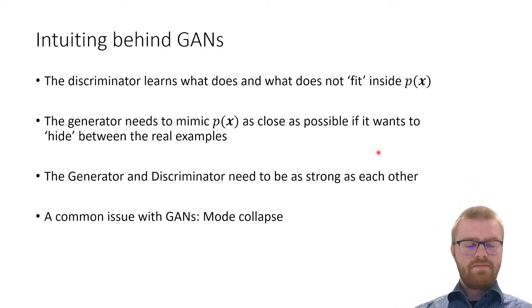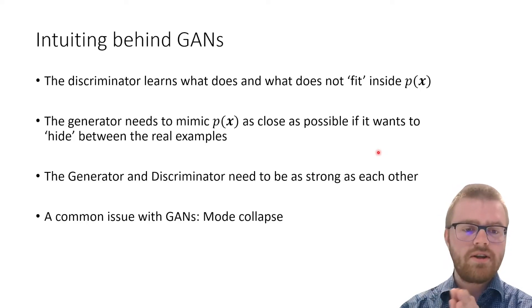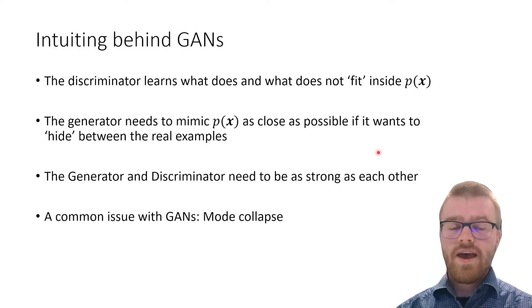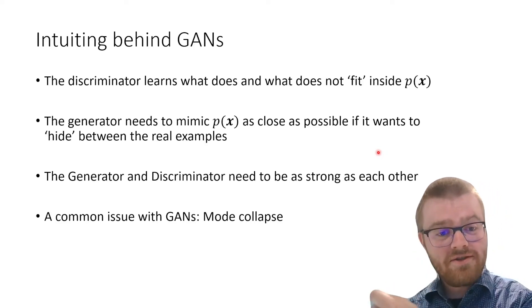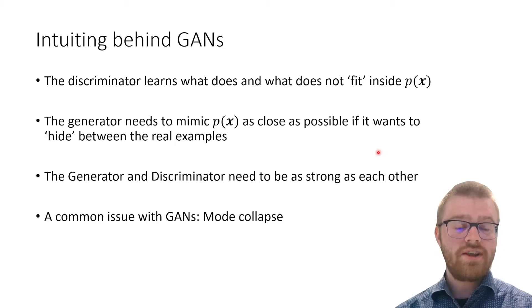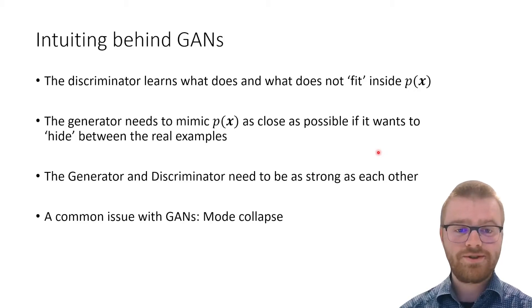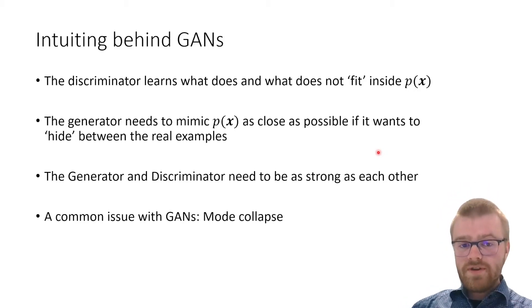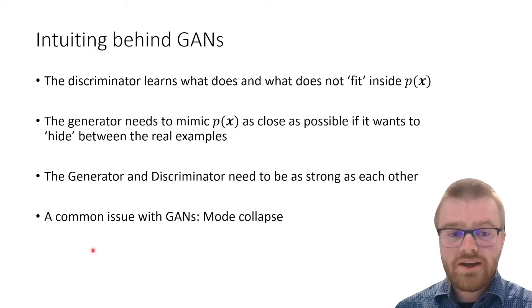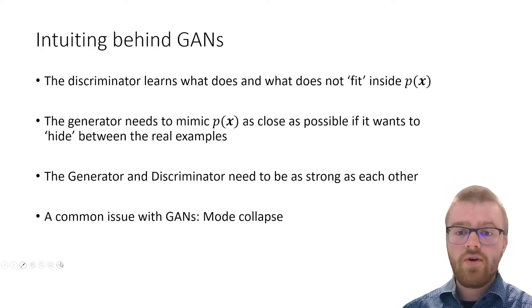The intuition behind this is that the discriminator learns what does and what does not fit inside of the probability distribution P(x). And the generator tries to oppose this. It will need to mimic P(x) as close as possible if it wants to hide between the real examples. Important here is that the generator and discriminator need to be as strong as each other. If one is way stronger than the other, it's clear to see that you run into all kinds of issues.